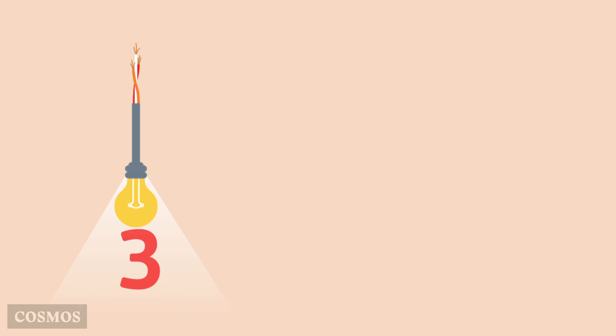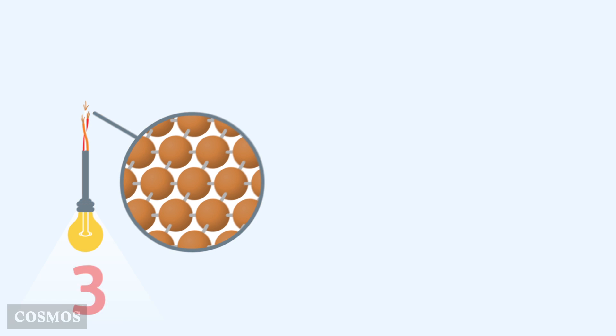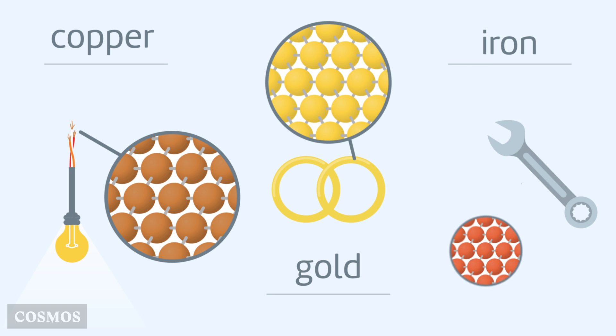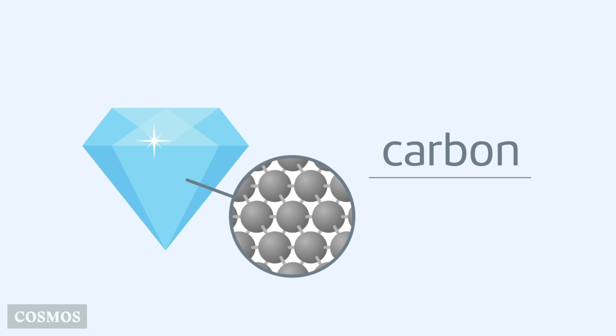But most elements don't exist as single atoms or molecules. Instead, their atoms bond together in continuous frameworks called lattices. Copper and other metals form lattices. So does carbon, the element that makes up diamonds.